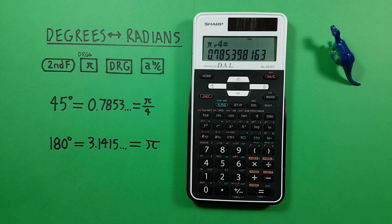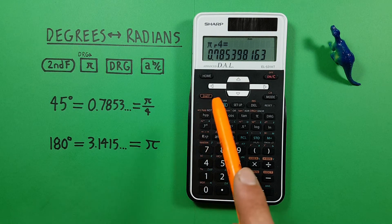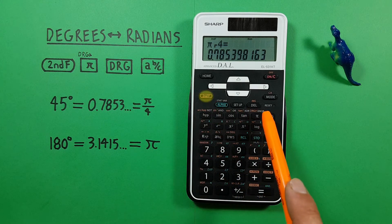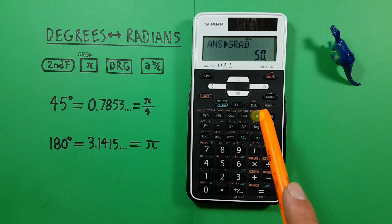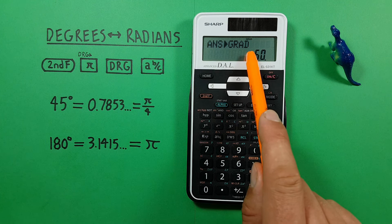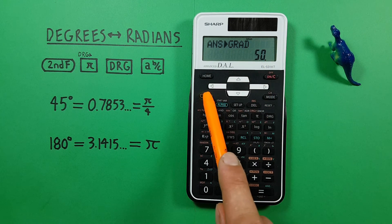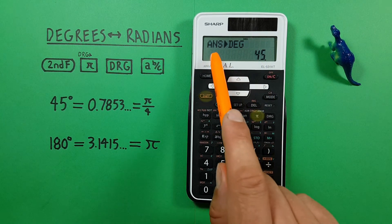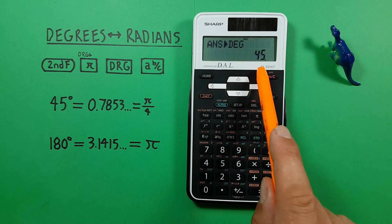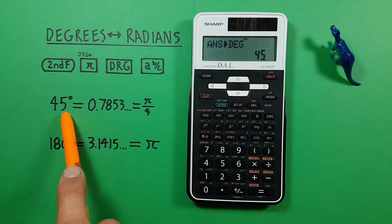And if we want to convert that to degrees, we can press the second function key and the angle convert key once to get to gradians. And if we do it again, we get our answer in degrees, which is 45 degrees, which we know is correct.